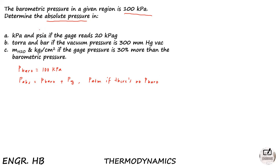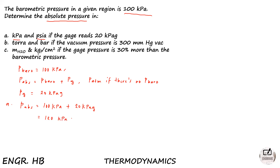Letter A: determine the absolute pressure in kPa and PSI absolute if the gauge reads 20 kPa gauge. So the gauge pressure is equal to 20 kPa. The absolute pressure equals barometric pressure (100 kPa) plus gauge pressure (20 kPa). You may put the G subscript or not — it's the same. So 100 plus 20 gives 120 kPa absolute.